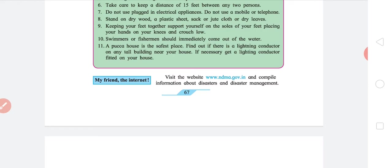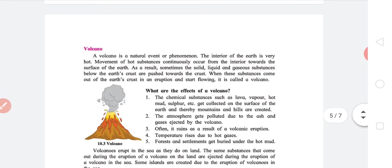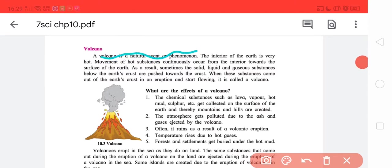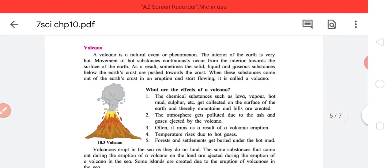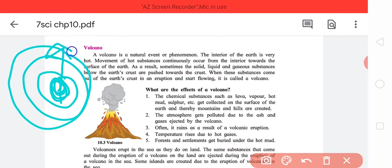Fifth, volcano. Luckily in India we have only one volcano and that too in the remote Andaman Nicobar islands. So let's discuss about volcanoes. First, a volcano is a natural event or phenomenon. The interior of the earth is very hot. Movement of substances continuously occur from interior to the surface of earth. If you have learned the structure of earth, this is crust, this is mantle, and this is core. The mantle is continuously generating heat and giving it to the crust.